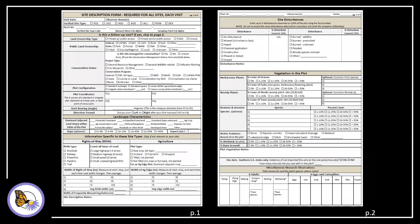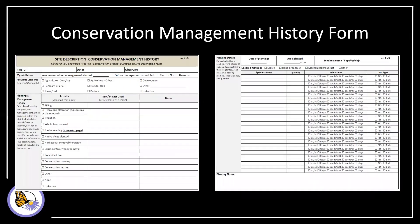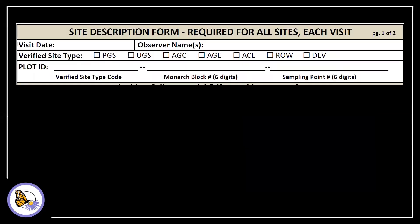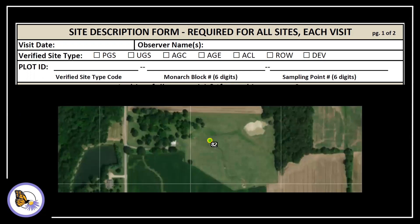The site description form consists of two pages. Here you record where your plot is, what its shape is, and some basic management and land cover characteristics. If the site is managed for conservation, mark yes and then fill out the conservation management history form. We'll walk through the conservation management history form later — it's two pages with some basic options for recording management details. Back to the site description form, you'll fill out the top part every time you visit the site. It's important to record the date, your name, the plot ID, and what land cover or site type it is.